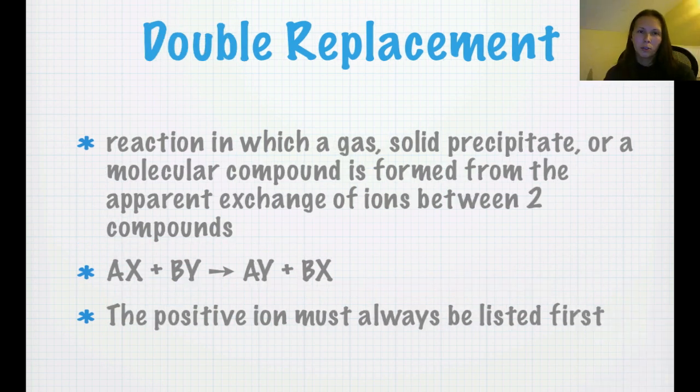This is similar to a double replacement reaction where a gas, solid precipitate, or a molecular compound is formed from the apparent exchange of ions between two compounds. So, we have A and X dancing together and B and Y dancing together and X and Y just kind of decide, yeah, we'd rather dance with the other person. We think they're much more interesting. So, you end up with A, Y, and B, X. So, you know, when you're writing this, the positive ion must always be listed first, but you guys are going to see so many of these double replacement reactions in the next couple days. You'll probably want to throw up.